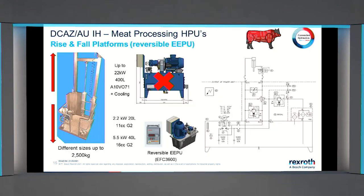The reversible EEPU was designed for the Rise M4 platform application. On screen is a size comparison of a traditional power unit versus our EEPU — we've been able to reduce the spatial footprint so much that we can mount these units to the top of the platform, or way up in the roof, out of the platform's reach. This takes away any risk of accidental tampering and puts the unit out of the way of harsh chemicals used in the cleaning process.